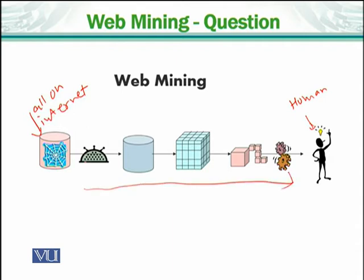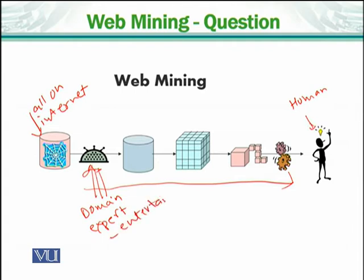For example, this picture tells you that you have knowledge of a domain expert. This means it is not possible that you will understand the entire web — you will divide it into different domains. For example: entertainment domain, sales and purchase domain (which we can call inventory), and banking sector domain, and so on.